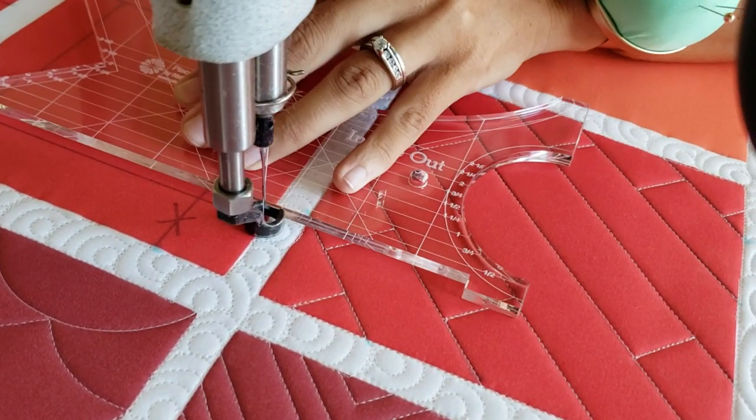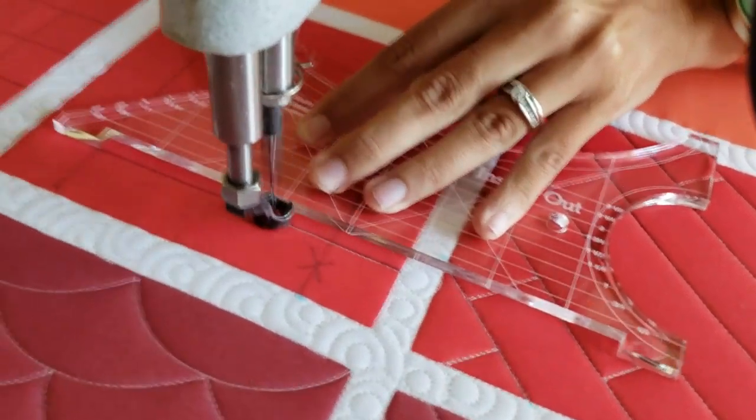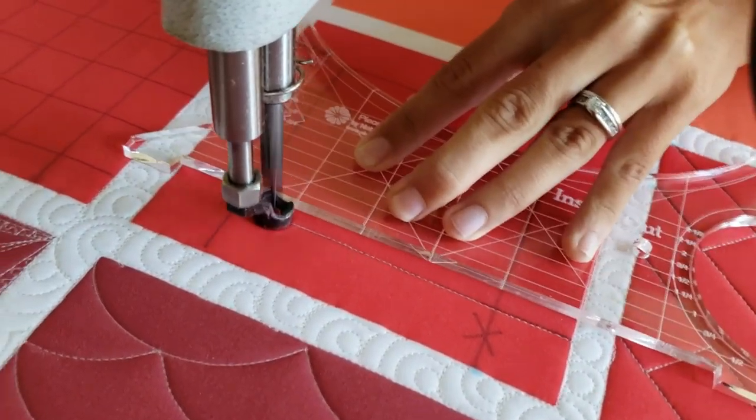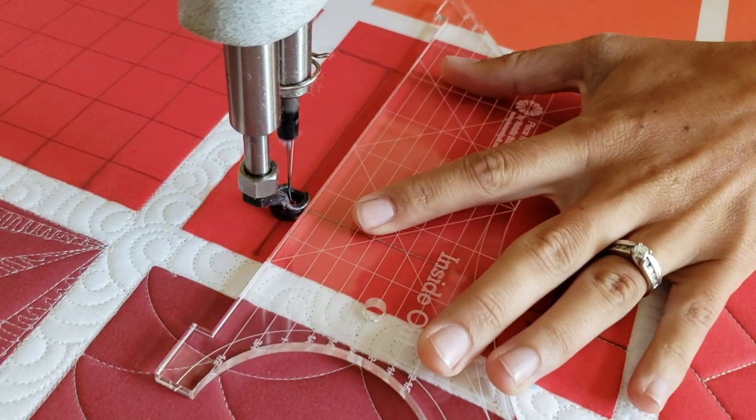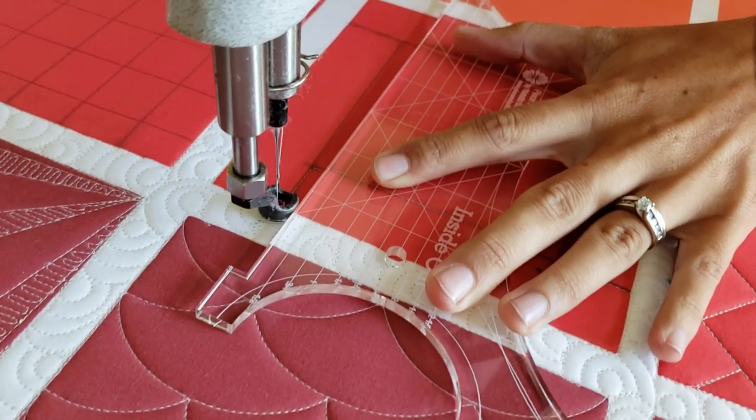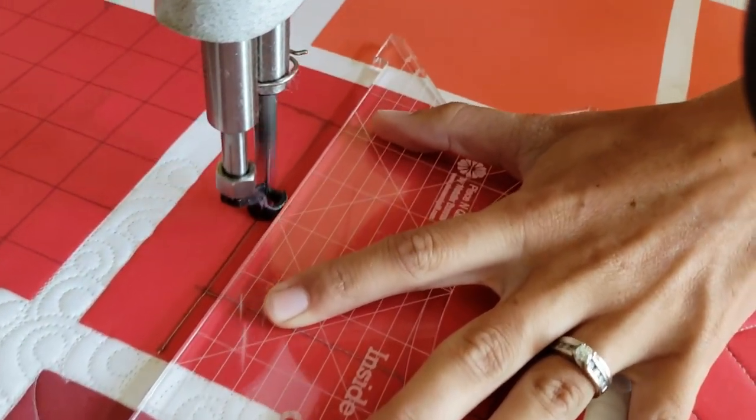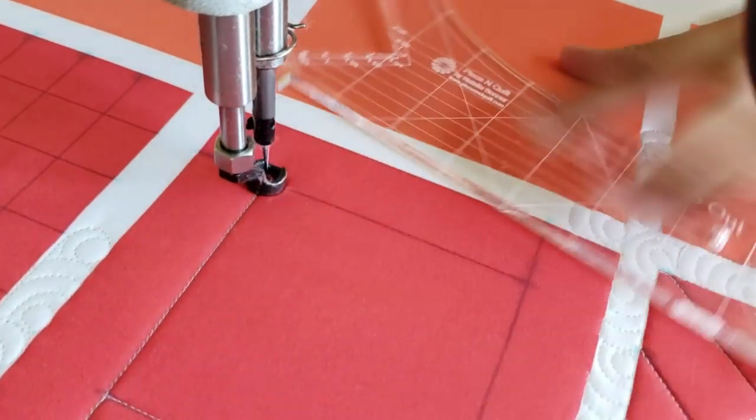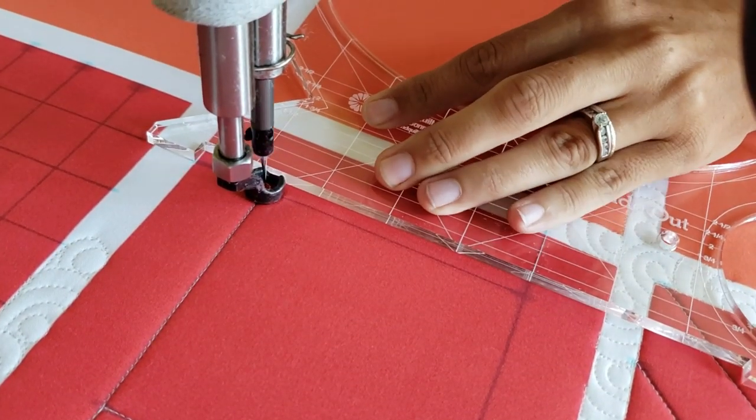To stitch out this design, the first thing I've done is use my marking marker and my machine quilting ruler, and I've gone through and marked an inside line design that's one inch away from the outside of the block.